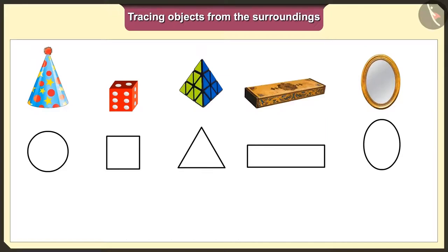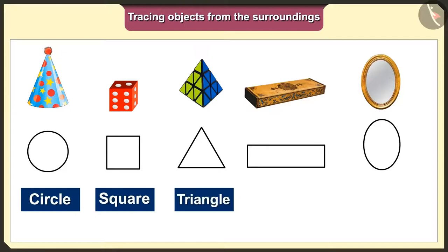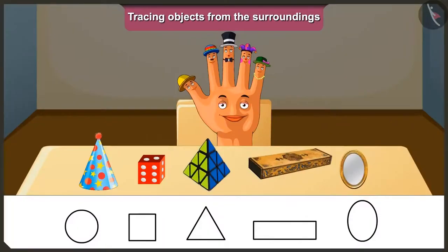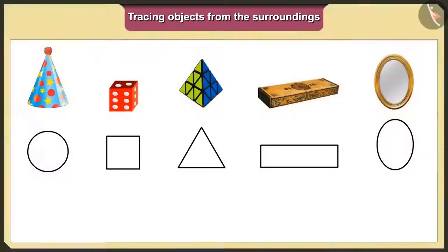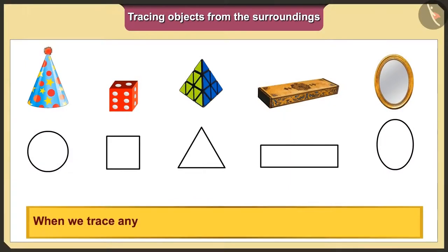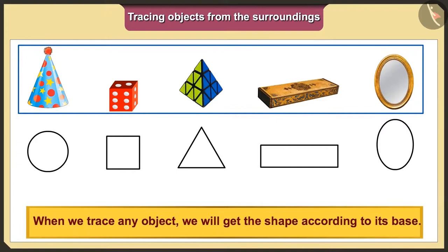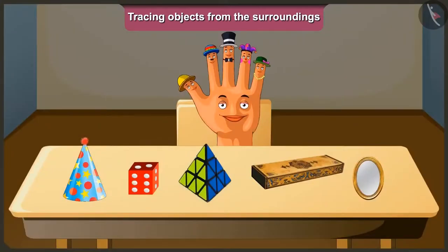So, today we traced the objects in our surroundings and got the shapes like circle, square, triangle, rectangle and oval. Yes, so friends, remember that when we trace any object, we will get the shape according to its base. We will meet again in the next video, bye.